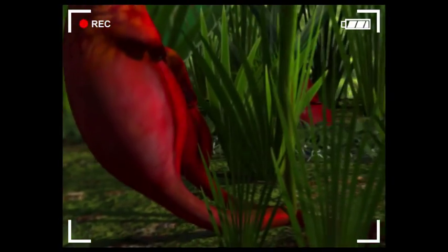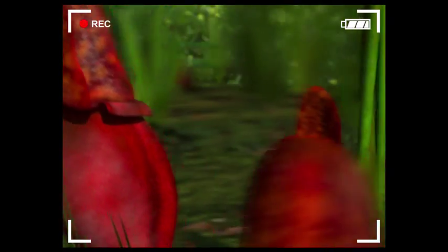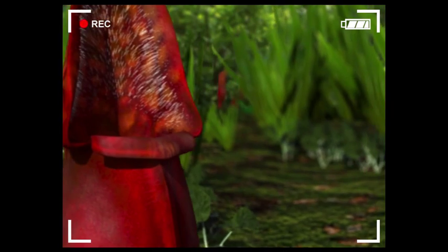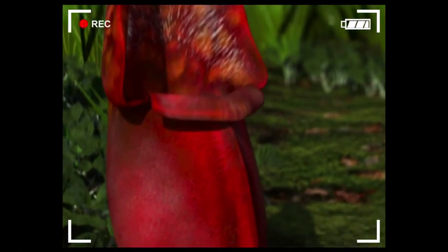Look at the leaves. They lure bugs into the trap with tasty nectar. Bugs see these veins and think it will lead them to more nectar. So they go inside and into a trap.